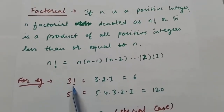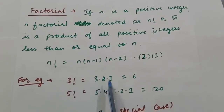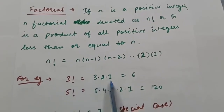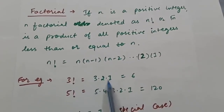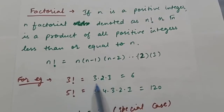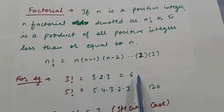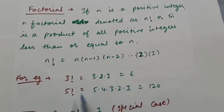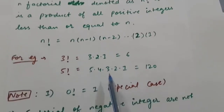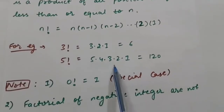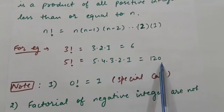For example, 3 factorial will be 3 × 2 × 1, so you decrease the number down to 1 and multiply all the numbers, giving you 6. And 5 factorial will be 5 × 4 × 3 × 2 × 1, which equals 120.